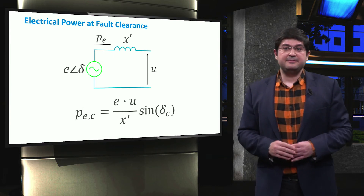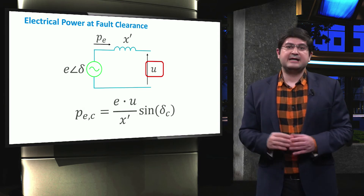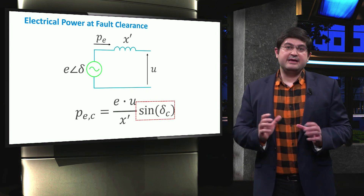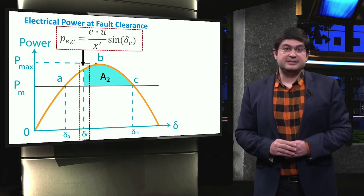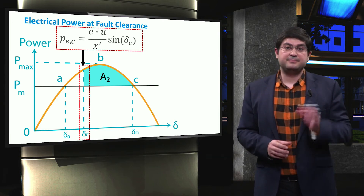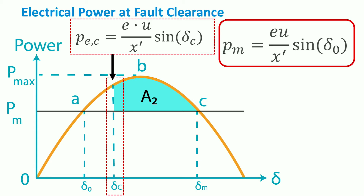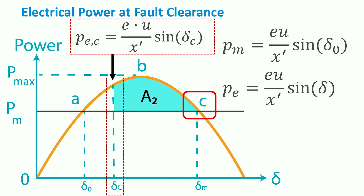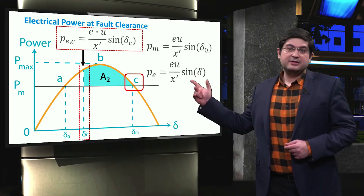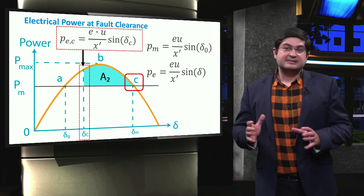When the fault is cleared, the terminal voltage U regains almost its pre-fault value. As a result, the electrical power at this rotor angle is obtained depending on the sine of delta C. If we look at the power versus rotor angle at delta C, the electrical power has a larger value than the input mechanical power. This means the machine is injecting more electrical power to the grid than its input mechanical power, so the rotor starts to decelerate due to the release of its kinetic energy to the grid — the rotor enters the deceleration mode. Area A2 represents the kinetic energy injected back to the electrical grid. At point C, the rotor enters again from the deceleration mode to the acceleration mode.